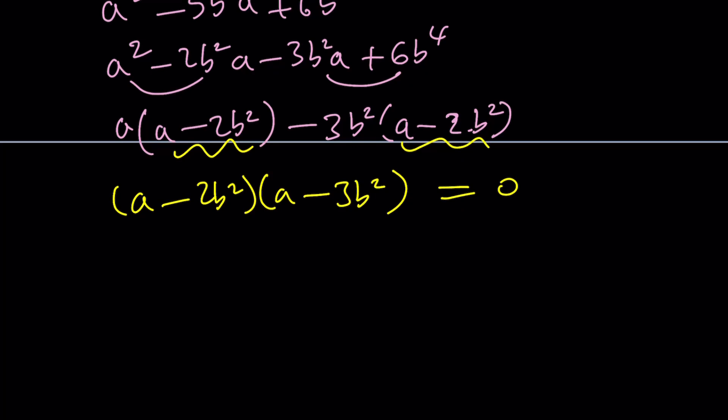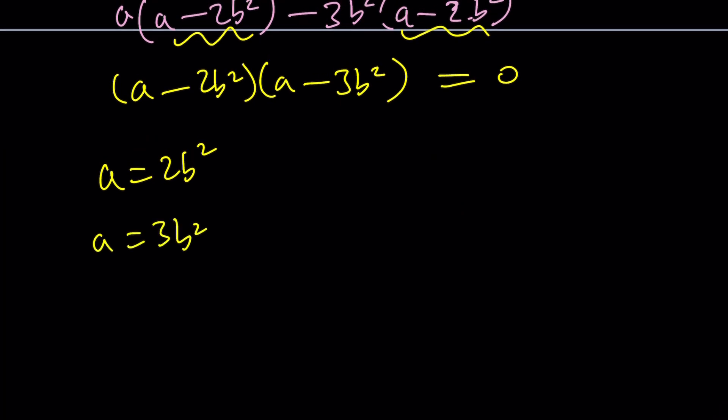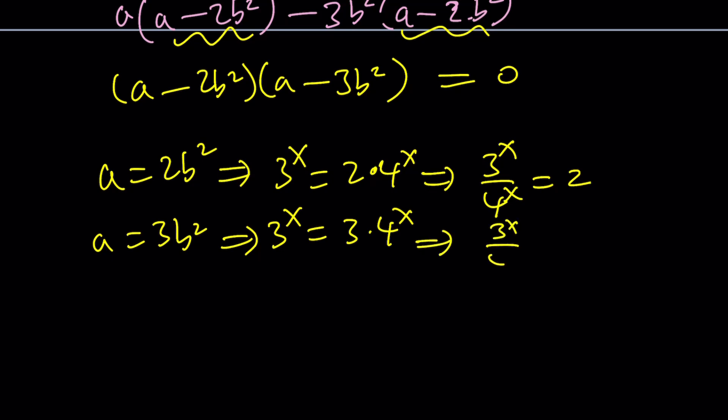From here, we're getting two solutions. a is 2b squared or a is 3b squared. And this implies a is 3 to the x, and b is 2 to the x. So that's going to be 4 to the power x. And from here we can divide by 4 to the x. From the second one we're going to get 3 to the x equals 3 times 4 to the x. 3 to the x over 4 to the x is just going to be a 3. So there are two possible values for that.